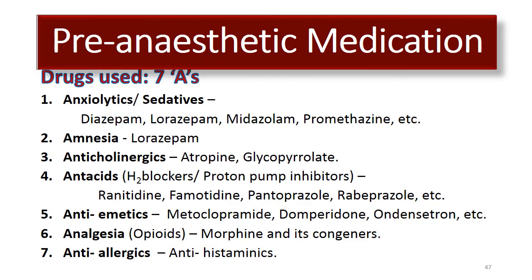Remember the 7As as pre-anesthetic medication. For anxiolysis or sedation: diazepam, lorazepam, midazolam, or promethazine. For amnesia: lorazepam. For anticholinergic action: atropine or glycopyrrolate. For anti-acid effect — H2 blockers or proton pump inhibitors: ranitidine, famotidine, pantoprazole, rabeprazole. For antiemetic action: metoclopramide, domperidone, or ondansetron. For analgesia: morphine or its congeners. For anti-allergic action: first or second generation antihistaminics.